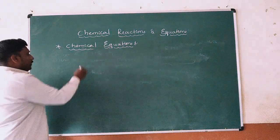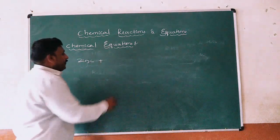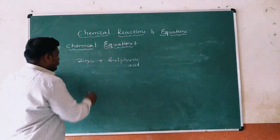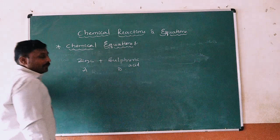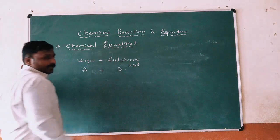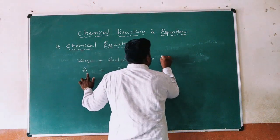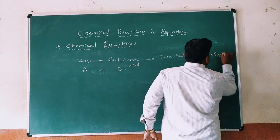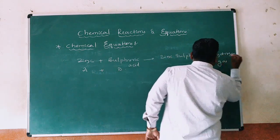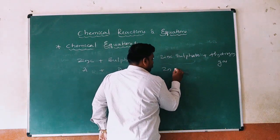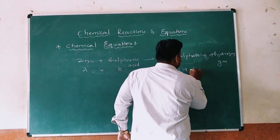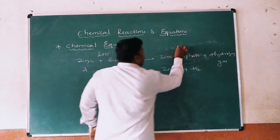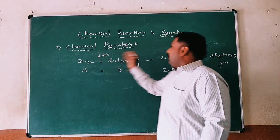Take another example: when zinc reacts with sulfuric acid — zinc is A and sulfuric acid is B. A plus B, with an arrow, gives the product: zinc sulfate plus hydrogen gas. On the left-hand side we have the reactants, and on the right-hand side we have the products, separated by an arrow. This is how we write chemical equations, with a plus sign used between reactants on the LHS and between products on the RHS.